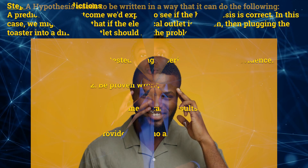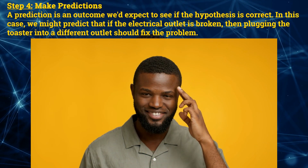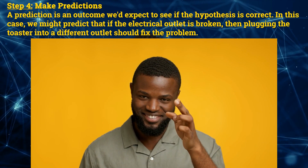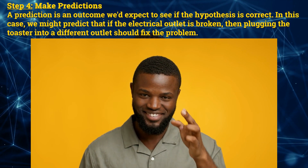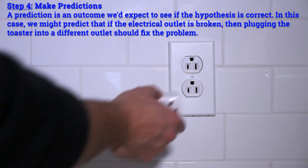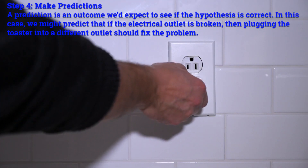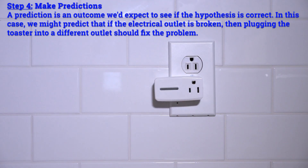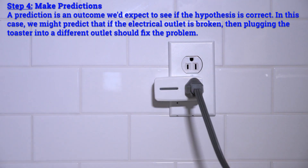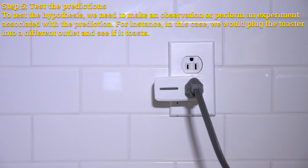Step 4: Make predictions. A prediction is an outcome we'd expect to see if the hypothesis is correct. In this case, we might predict that if the electrical outlet is broken, then plugging the toaster into a different outlet should fix the problem.